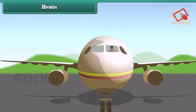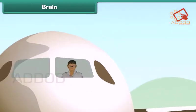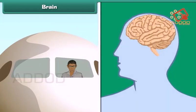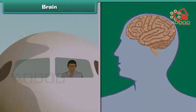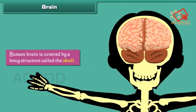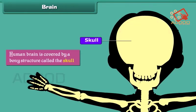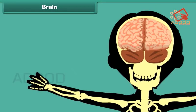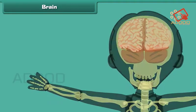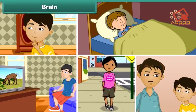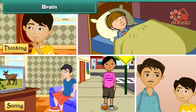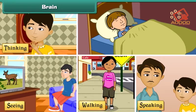Brain: just as the pilot is the boss of an aeroplane in flight, the human brain is the boss of the human body. The human brain is covered by a bony structure called the skull. The brain controls all the activities of the human body, such as thinking, seeing, walking, speaking, and even sleeping.